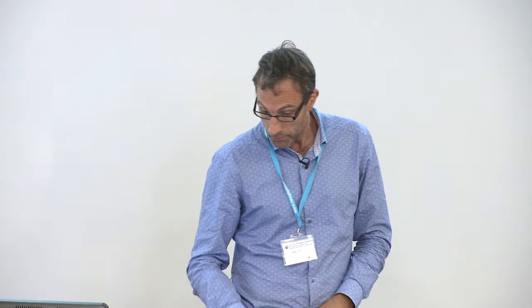So that's another way of showing that once you start playing around with trait variability in models, things happen that may allow additional understanding, but they are not always doing what you thought they would be doing. The second approach does a better job in thinking about coexistence of strategies because you allow multiple PFTs to coexist in a given pixel. The equilibrium assumption still applies through trait-environment relationships. You still assume all trait combinations are viable, and no new PFTs can arise — whereas the first approach allows you to develop new types of PFTs by predicting trait combinations beyond current trait space.